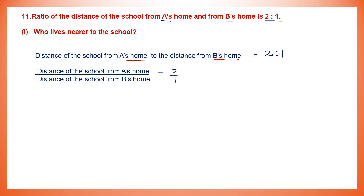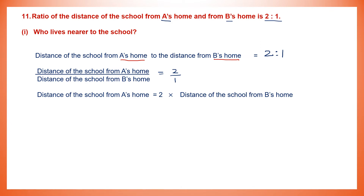Distance of the school from A's home is 2 and distance from B's home is 1. If we have to find the distance of the school from A's home, we write it as 2 into the distance from B's home. That means A's home is 2 times B's home distance. That means B lives nearer to the school than A, because A's home is twice the distance from B's home. So we know that B lives closer to school than A.